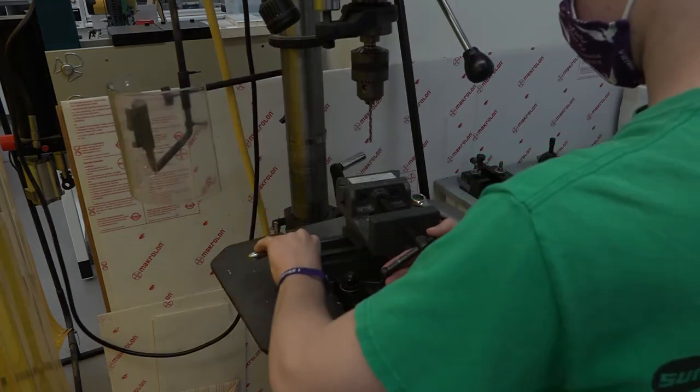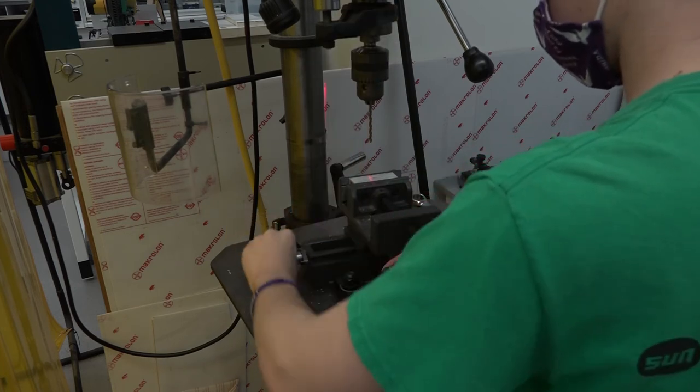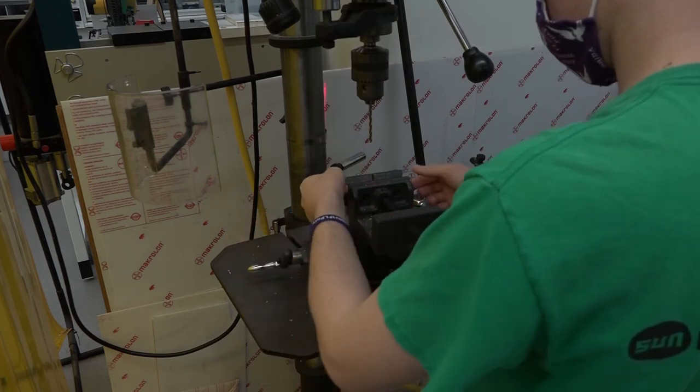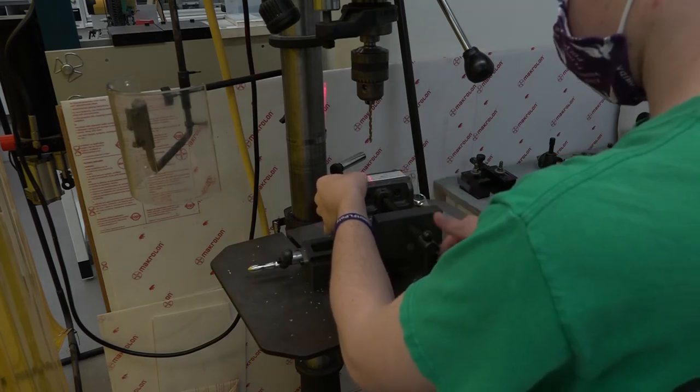Some drill press models will have a laser to align the drill with the area you intend to drill. If your drill press does not have this, you can partially lower the drill bit closer to the material to ensure that it is properly aligned.